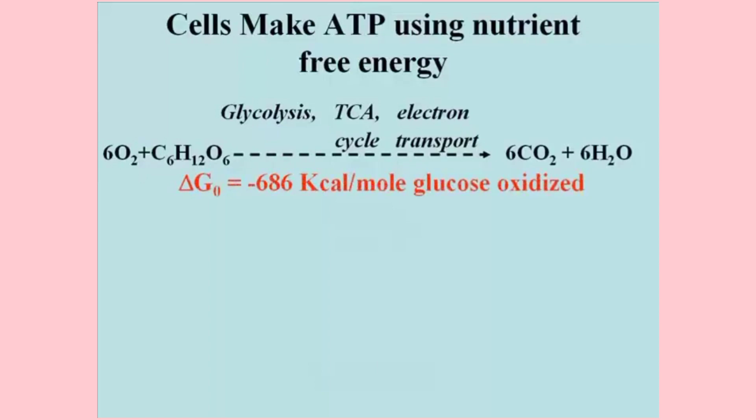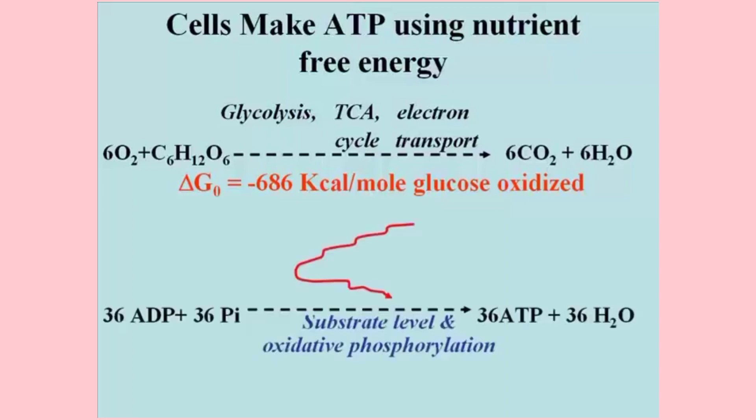Here again is the chemical equation for the combustion of glucose in cells. This occurs in three steps: the principal pathways of glycolysis, the Krebs or TCA cycle, and electron transport. This releases 686 kilocalories per mole of glucose oxidized. The free energy released in these three pathways is captured in ATP either by substrate level or oxidative phosphorylation.